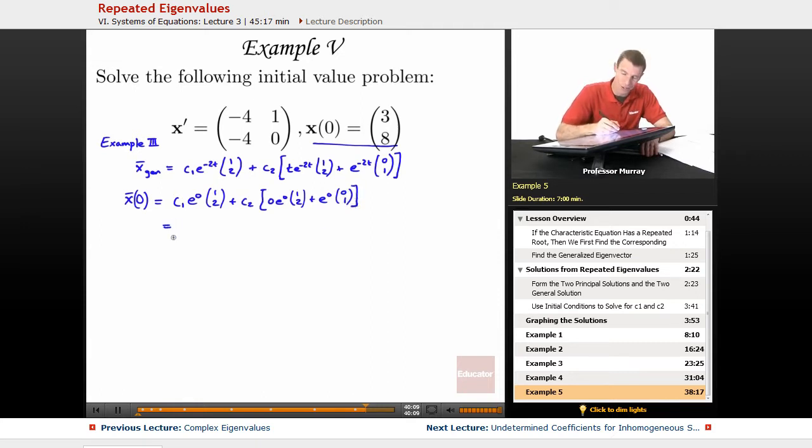And so, a lot of these terms drop out. The e to the 0s are all going to be 1, so I get c1 times (1, 2), plus c2. Now, this term completely drops out, because it's multiplied by 0. And then, I just have a c2 times (0, 1), because e to the 0 is still 1. And that's supposed to be equal to (3, 8).